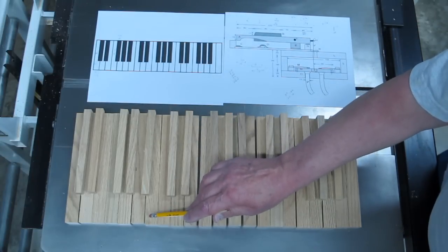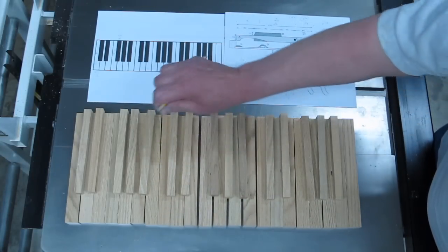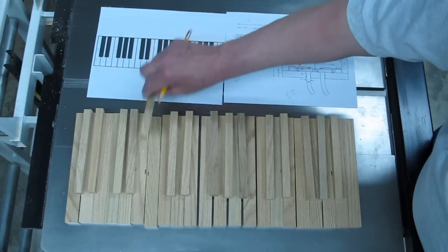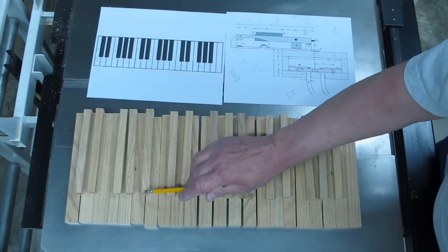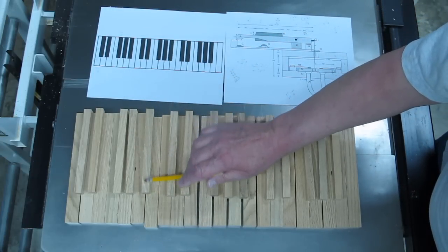I've made all the white keys. These will be the lower portion of the black keys, they're the same height, and it's my intention to make the raised portion by gluing on a piece of walnut.